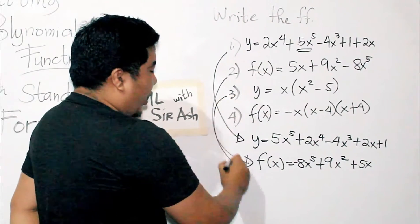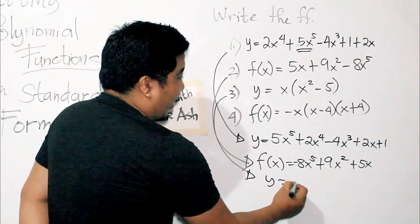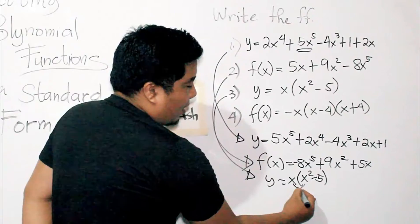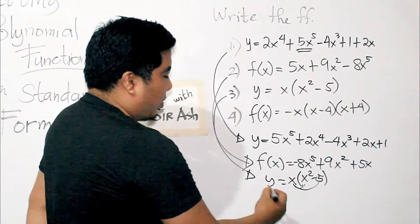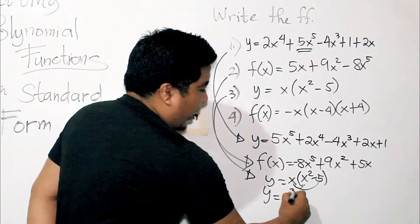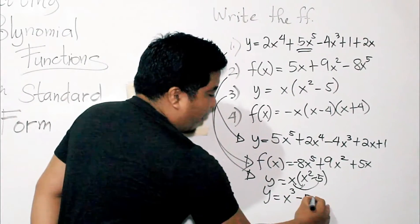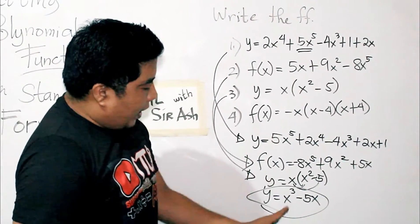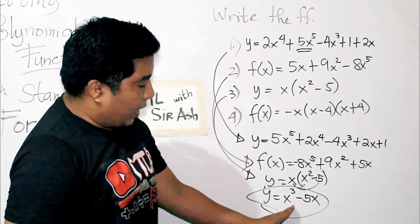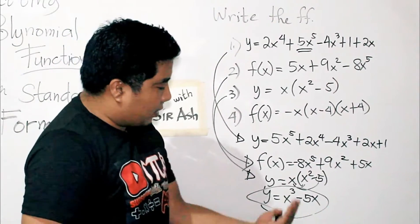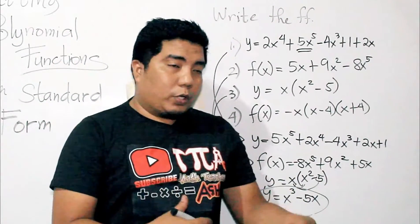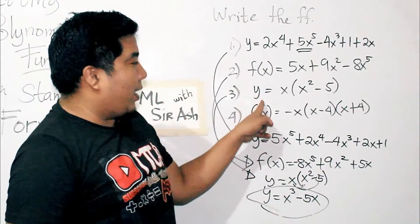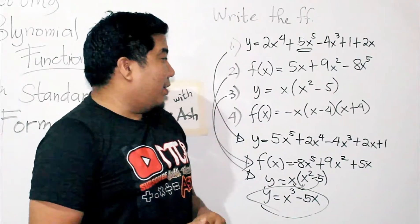So, what we need to do here is y is equal to x times x squared minus 5. So, we will distribute our x. So, that will give us y is equal to x cubed minus 5x. So, basically, this is already in the standard form because it is arranged in the highest term or the highest exponent followed by the next term lower to that exponent. Easy, right? So, this is your final answer in writing example number 3 into standard form.